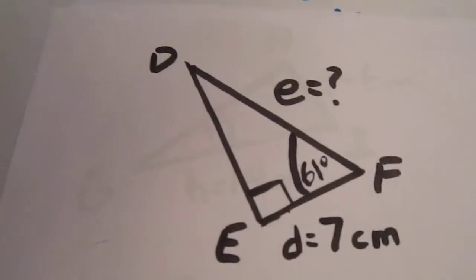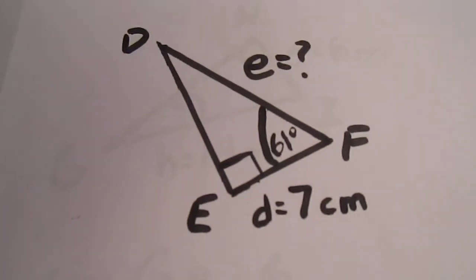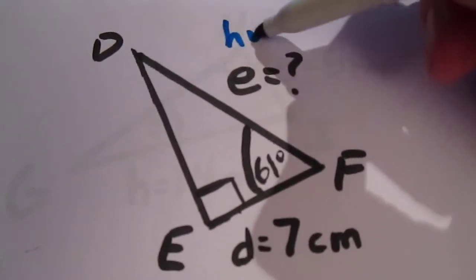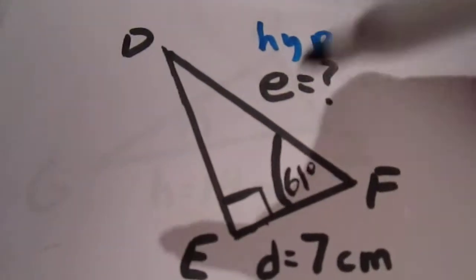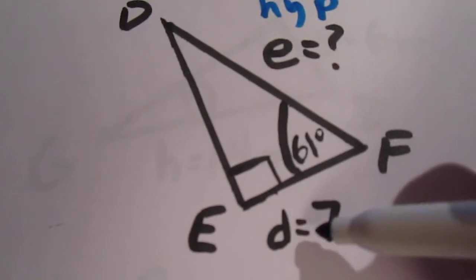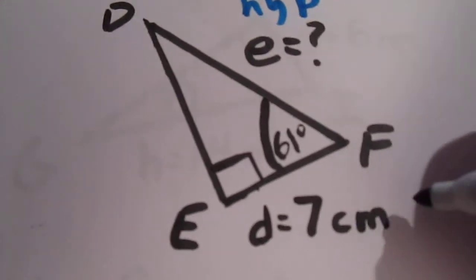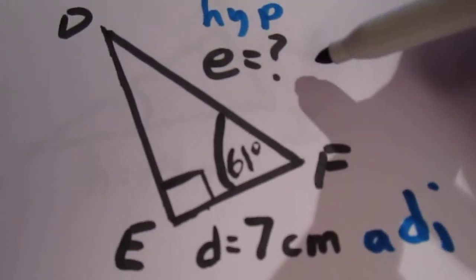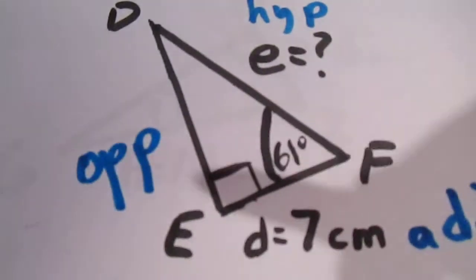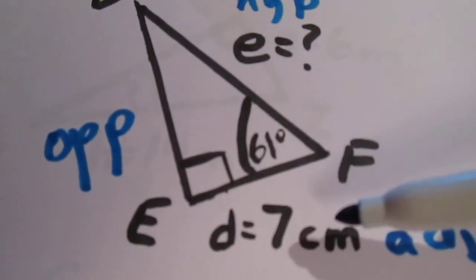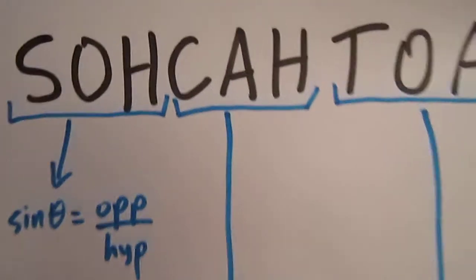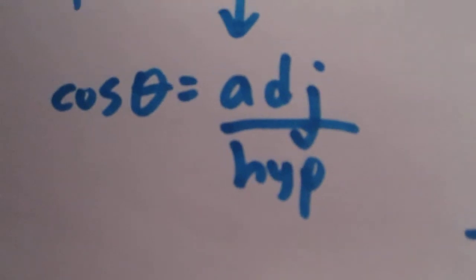In the next question, we would like to know the length of side E. We start by finding the hypotenuse, which is always across from the 90 degree angle. Then we find the relevant angle, which is 61 degrees, and ask what each side is in relation to it. This side must be the adjacent because it's right next to the 61 degree angle, and this side must be the opposite. We know the adjacent and we're looking for the hypotenuse. Going back to SOHCAHTOA, the cosine of an angle is adjacent over hypotenuse — CAH.